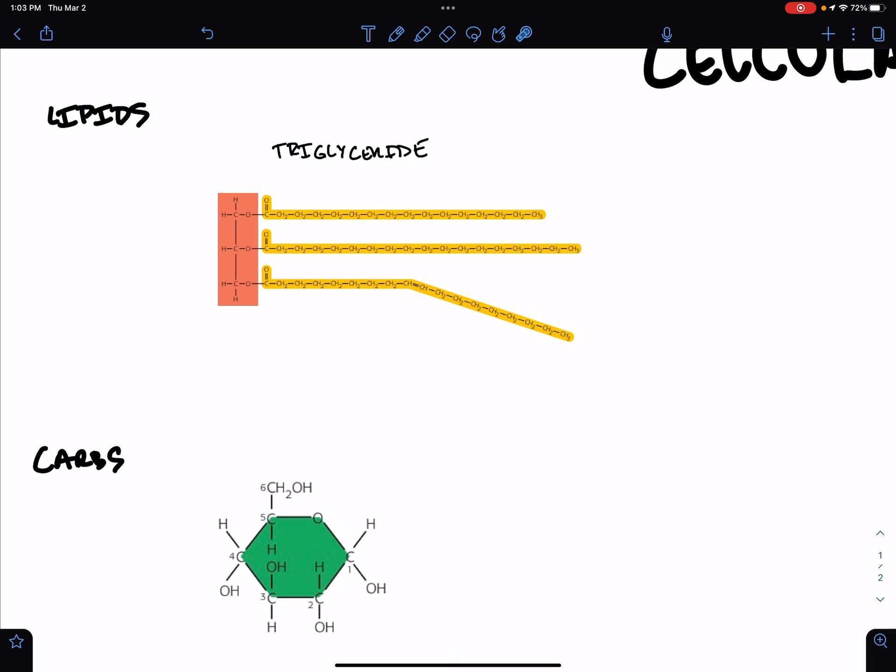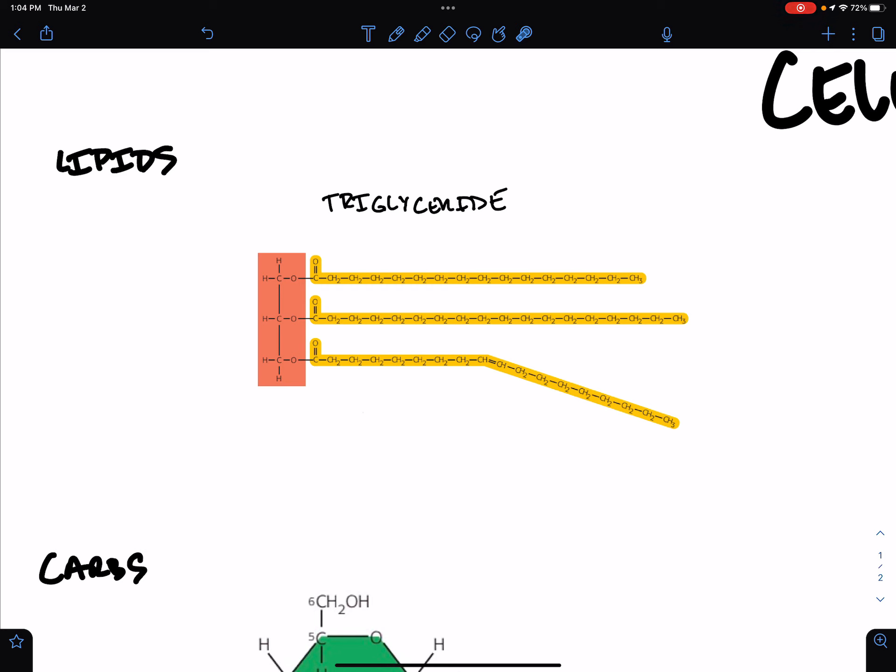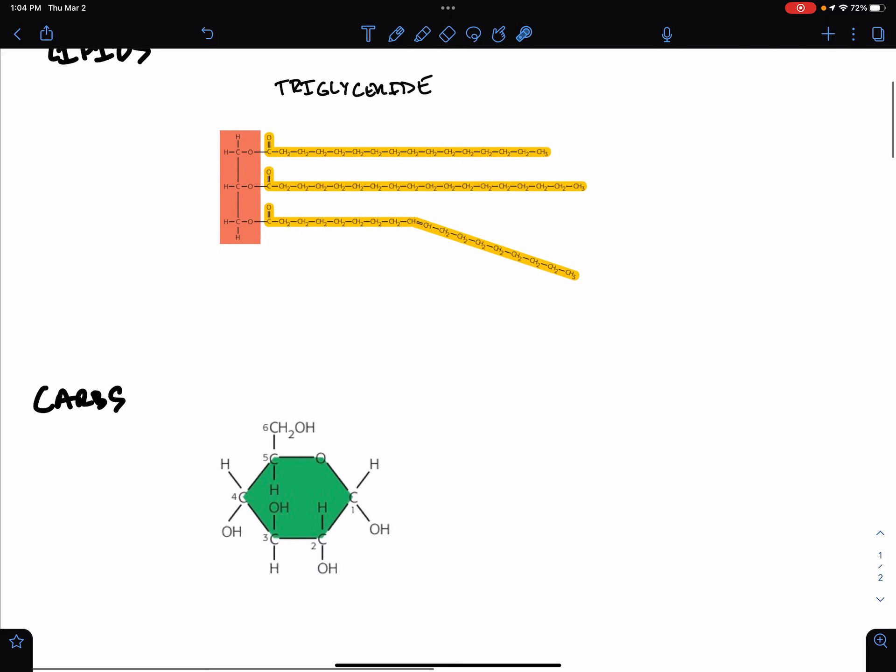But those properties also come with downsides. This is a great long-term energy storage molecule, but because it's so large and hydrophobic, it's too big to burn all at once. It's not a very quick burning energy source. If you burned it all at once, that would be a huge amount of energy released. Because it's hydrophobic, it's hard to move around in the body.